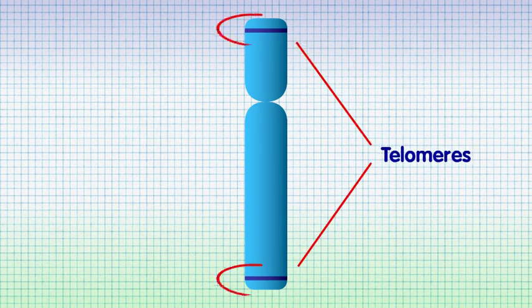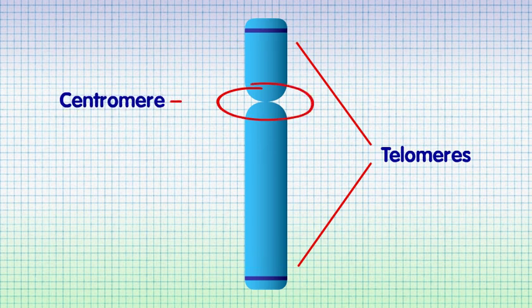Chromosomes have a top and a tail known as the telomeres and a centerpiece which is known as the centromere.